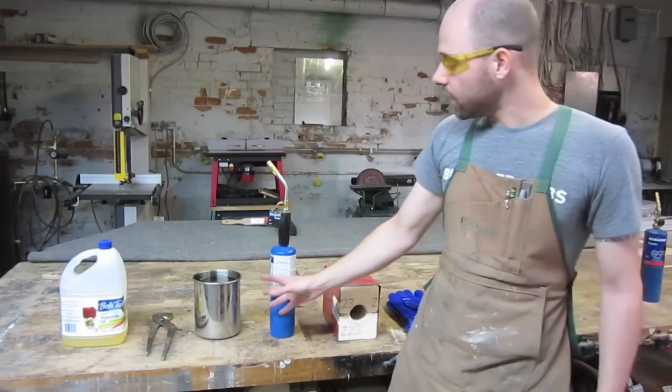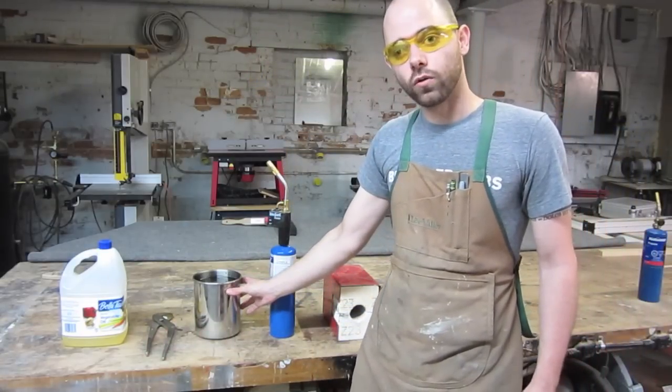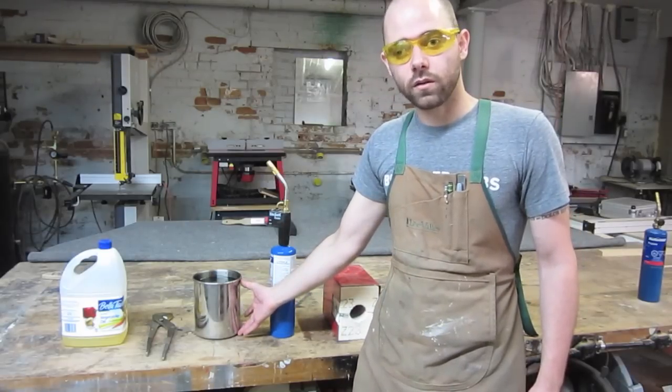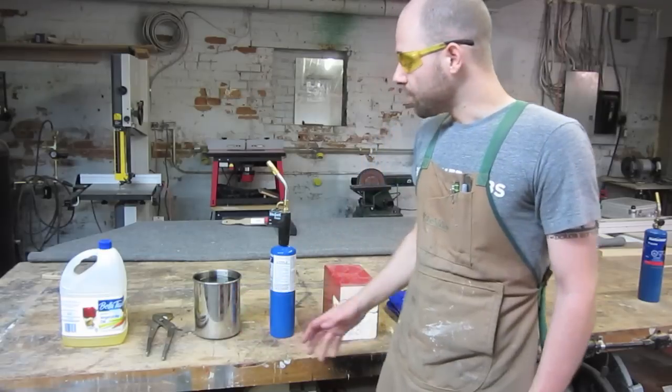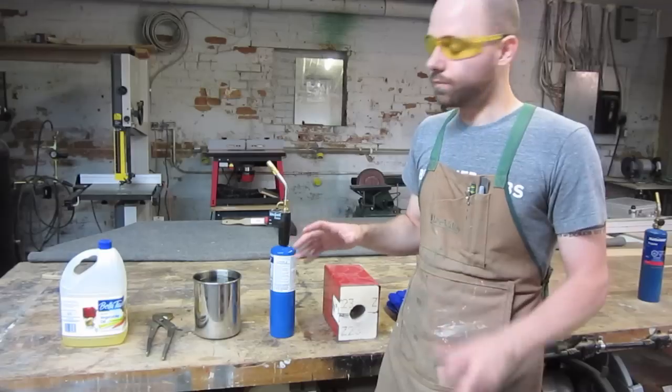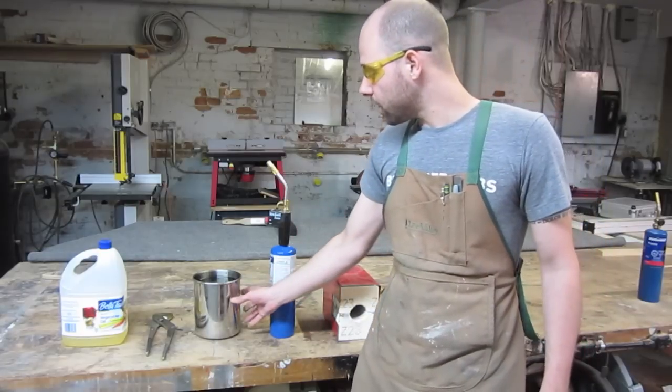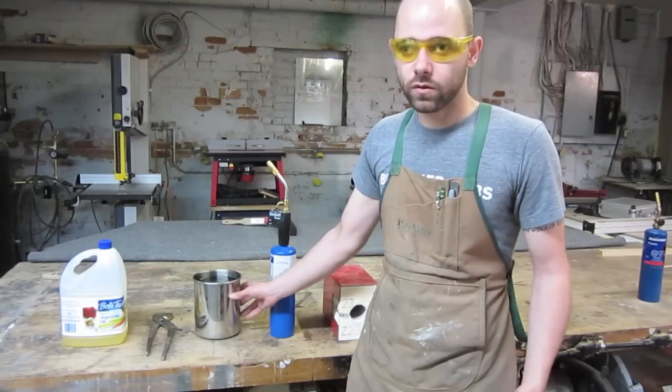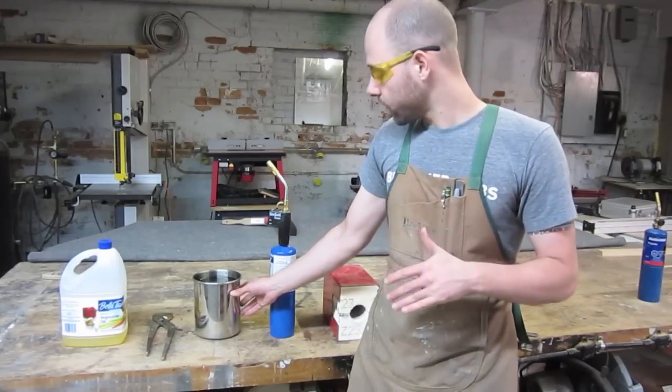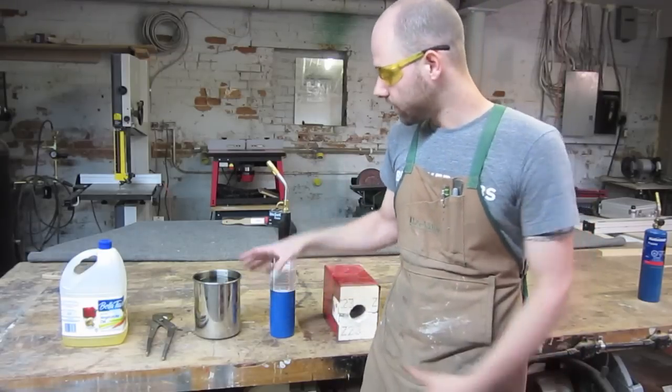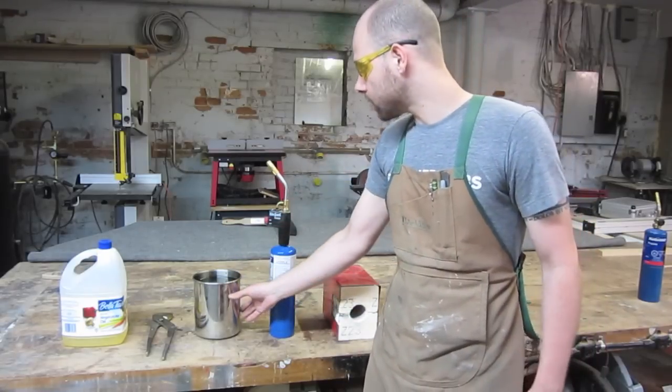Next thing you need is a container to hold your quenching oil. This is actually a small wine bucket that I got from a kitchen supply place. Kitchen supply places are great for this kind of thing because they have lots of different things that would work. Anything you buy needs to be either aluminum or stainless steel, no plastic because you'll melt through it. Bain-marie containers or anything long enough to fit your knife in is perfect.